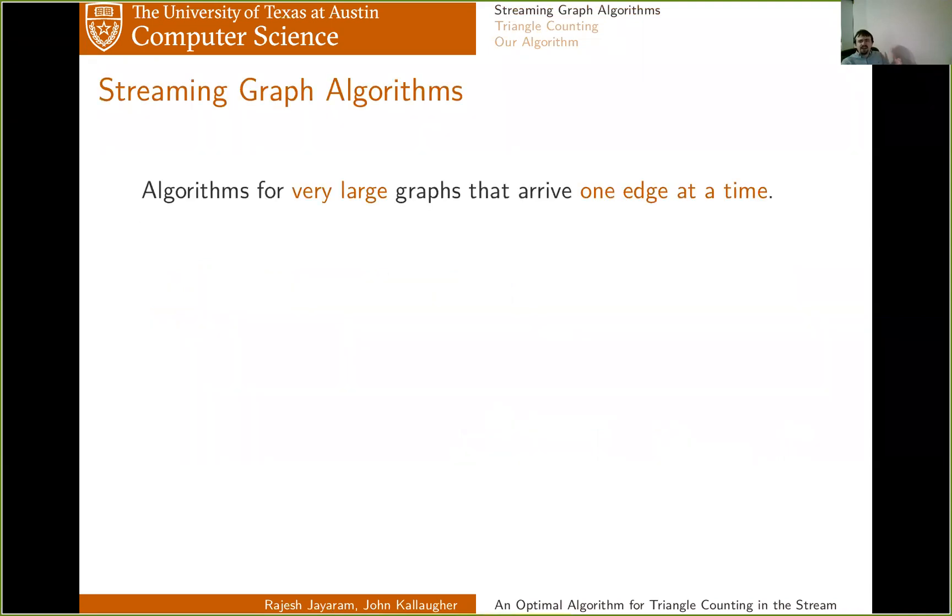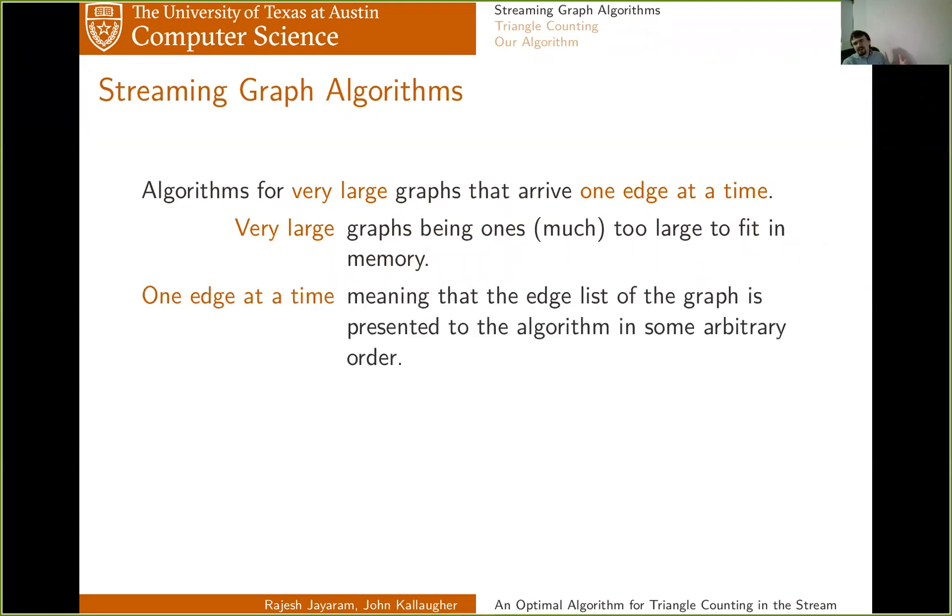I want to start by telling you what I mean by in the stream. Streaming graph algorithms are a class of algorithms for very large graphs that arrive one edge at a time. By very large, I mean they're much too large to fit in main memory. And by one edge at a time, I mean you're going to see the graph as the list of all of its edges in some arbitrary order.